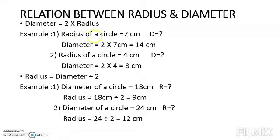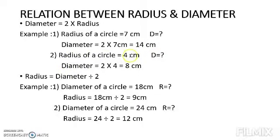Example 1: If the radius of a circle is 7 centimeters, then the diameter will be 2 × 7 = 14 centimeters. Example 2: If the radius of a circle is 4 centimeters, then the diameter will be 2 × 4 = 8 centimeters.